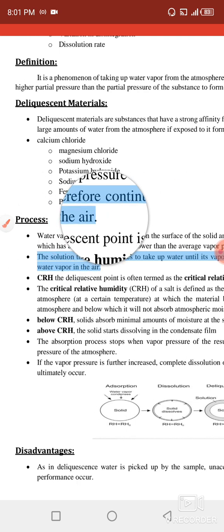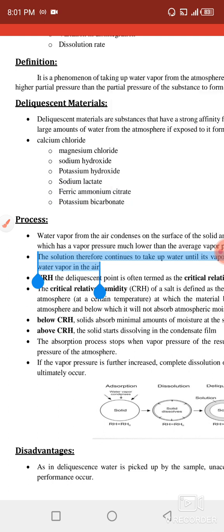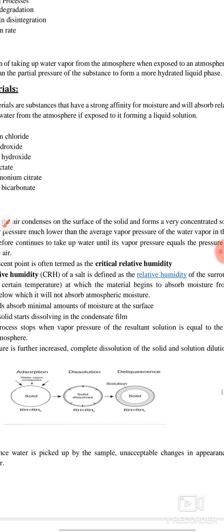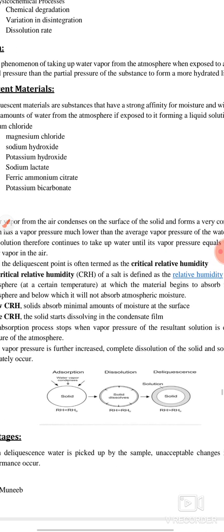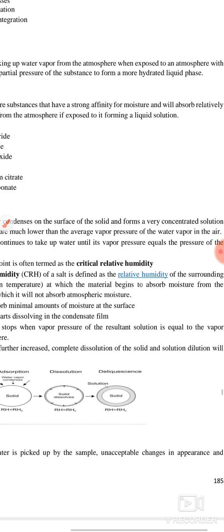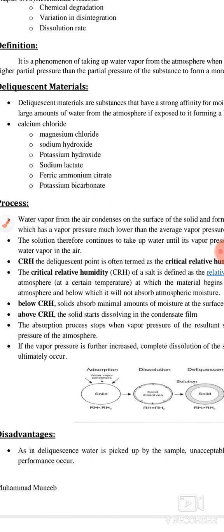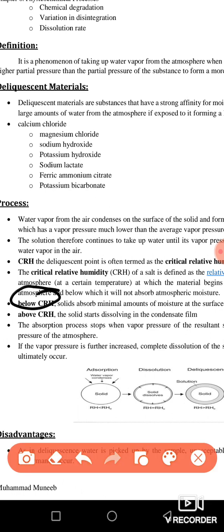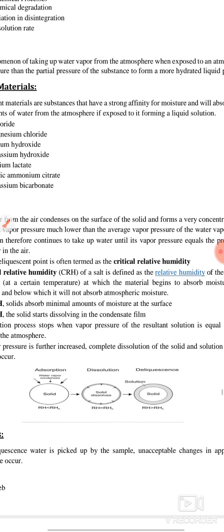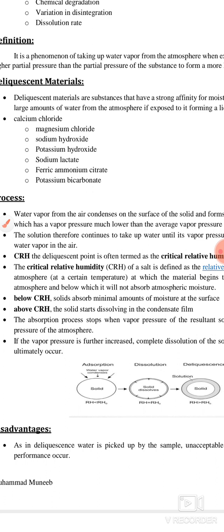This equilibrium point can also be called critical relative humidity. Critical relative humidity is the property of a salt defined as the relative humidity of the surrounding atmosphere at which the material begins to absorb moisture. Below critical relative humidity, the solid absorbs a minimum amount of moisture; above it, the solid starts to condense a film of solution on its surface.